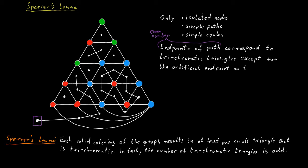This is an endpoint of a path, but it does not correspond to a trichromatic triangle. So this is sort of an anomaly. If we take this into account, we are left with the claimed odd number of trichromatic triangles.